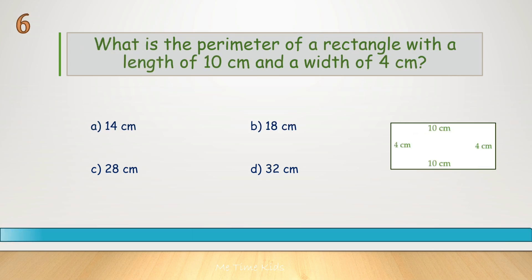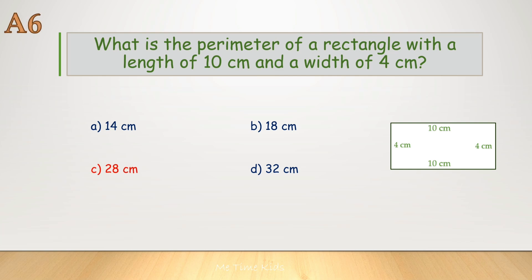What is the perimeter of a rectangle with a length of 10 centimeters and a width of 4 centimeters? Correct answer is C, 28 centimeters.